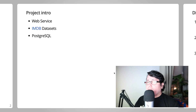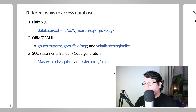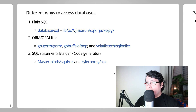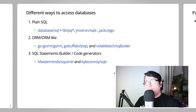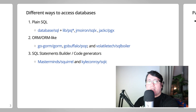We are building a web service using the IMDB datasets and Postgres. There are three ways I like to categorize accessing databases: plain SQL, which we covered in the last video (link in the description); ORM or ORM-like packages, which will be covered in this video — specifically GORM and SQL Boiler; and the third, coming next, SQL statement builders and code generators — specifically Squirrel and SQLC.